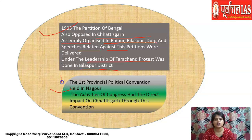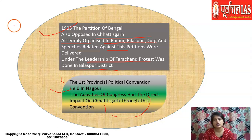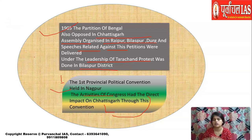In 1905, the first provincial political convention of Central Provinces was held at Nagpur. The activities of Congress had a direct impact on Chhattisgarh through this convention, as participants from Chhattisgarh had been continuously attending Congress sessions and were greatly influenced by its activities.